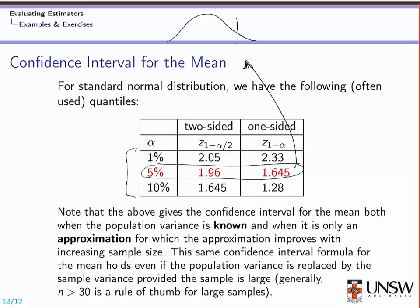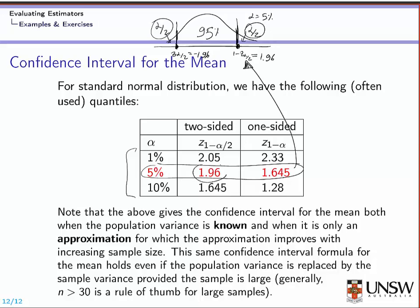For the two-sided case, if you cut alpha over 2 on each tail of the distribution, you have z alpha over 2 and z 1 minus alpha over 2. For alpha equal to 5%, this value is 1.96 and the other is minus 1.96. So you cut 2.5% of observations on the left and on the right tail of the distribution, ending up with 95% area in between these bars, and the quantile corresponds to 1.96.